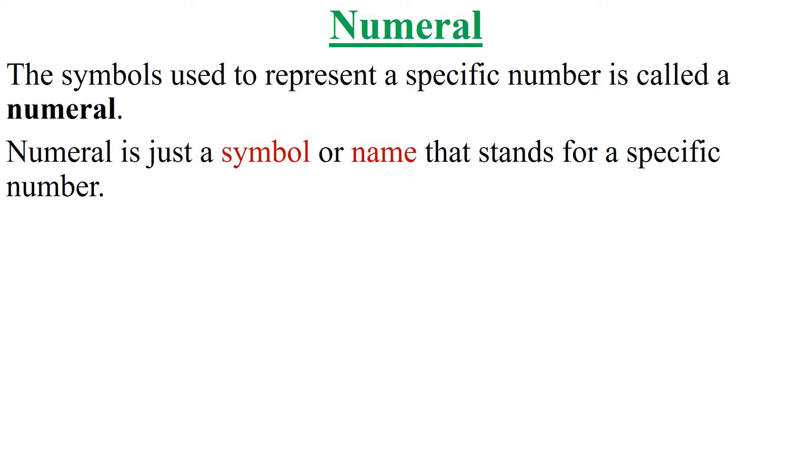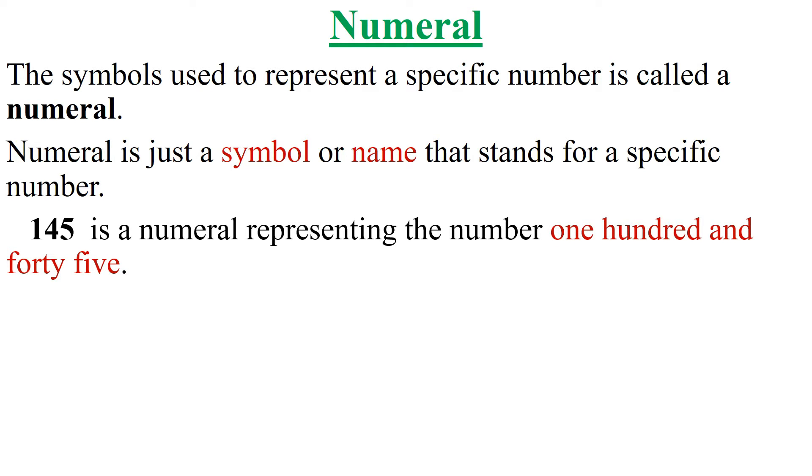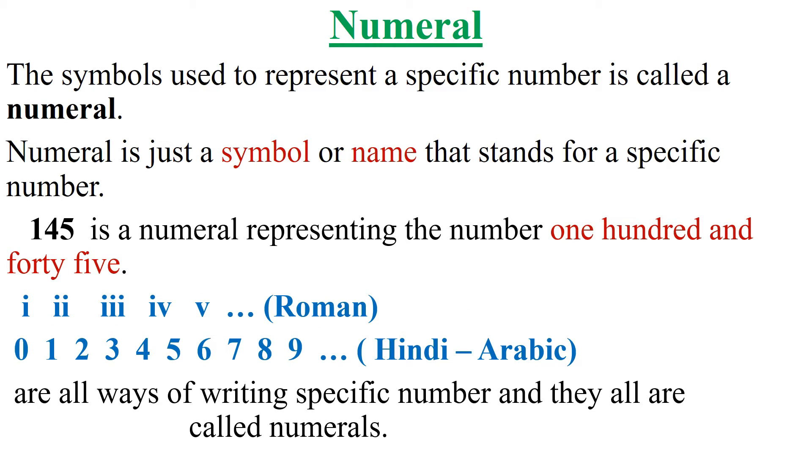We first start from numeral. What is a numeral? The symbols used to represent a specific number is called a numeral. Numeral is just a symbol or name that stands for a specific number. Like 145 is a numeral representing the number one hundred and forty-five. When you read numeral, you won't read it as combined like 145, you would read it simply as 145, or 29 or 34 is read as 34. Now the ways of representing numerals or numbers.